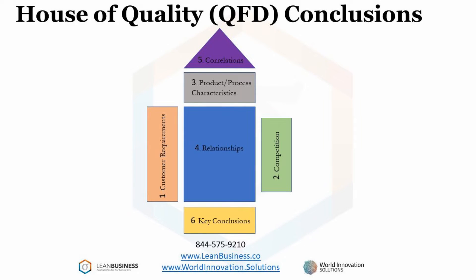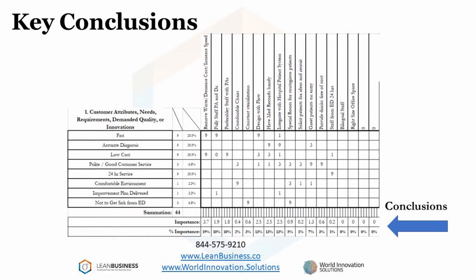The last step is to determine the conclusions. After performing this whole effort, the conclusions just fall out. These conclusions are based on your determination of relative values for the customer needs, along with the strength of correlation between the engineering efforts and the customer needs. The first column jumps out at 19% — that is using what Lean Six Sigma refers to as a value stream, which increases value stream velocity, decreases cost, and increases quality. This effort stands out as number one. Number two at 13% are: design with flow, have medical records handy, and integrate with hospital patient system. Note that seven engineering efforts came in at 3% or less.